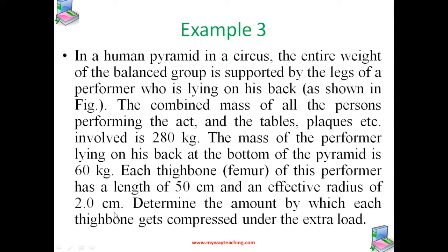In a human pyramid in a circus, the entire weight of the balanced group is supported by the legs of a performer who is lying on his back. The combined mass of all the persons performing the act and the tables, legs, etc. involved is 280 kg. The mass of the performer lying on his back at the bottom of the pyramid is 60 kg, and each thighbone of this performer has a length of 50 cm and an effective radius of 2 cm. Determine the amount by which each thighbone gets compressed under the extra load.